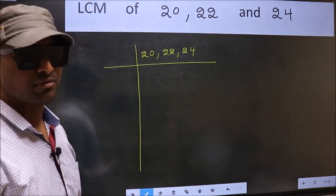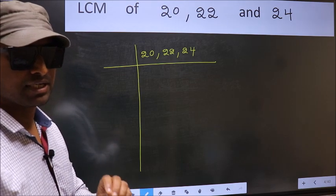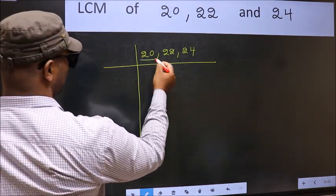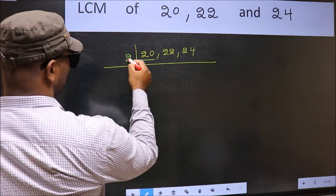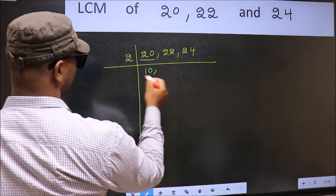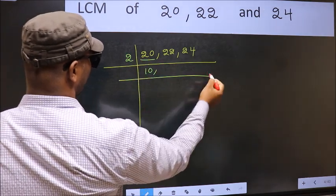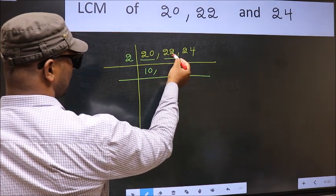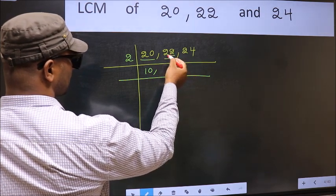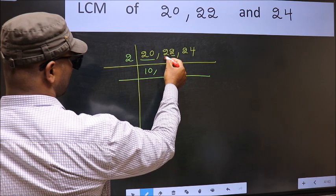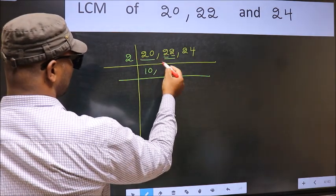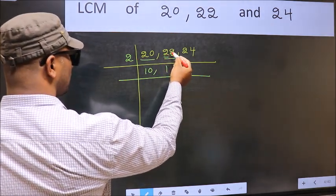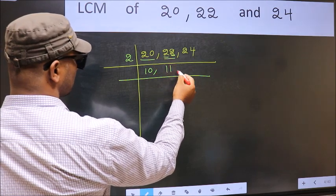Now you should focus on the first number which is 20 here. 20 is 2 tens, so 20 is divisible by 2. The other number 22 — last digit 2, so this is divisible by 2. First number 2: when do we get 2 in the 2 table? 2 ones is 2. The other number 22: 2 ones is 2.